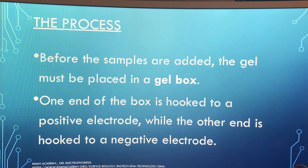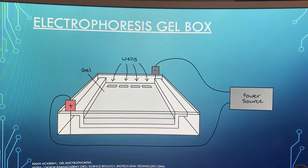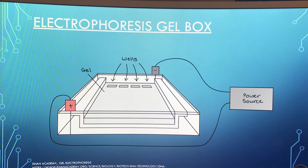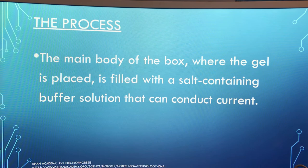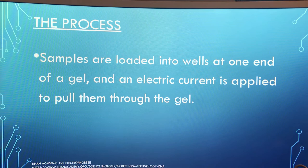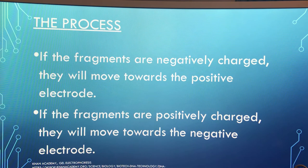The process. Before the samples are added, the gel must be placed in a gel box. One end of the box is hooked to a positive electrode, while the other end is hooked to a negative electrode. This is a diagram of an electrophoresis gel box. The main body of the box, where the gel is placed, is filled with a salt-containing buffer solution that can conduct current. Samples are loaded into wells at one end of the gel, and electric current is applied to pull them through. If the fragments are negatively charged, they will move towards the positive electrode; if positively charged, they will move towards the negative electrode.